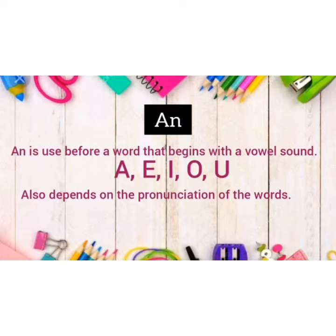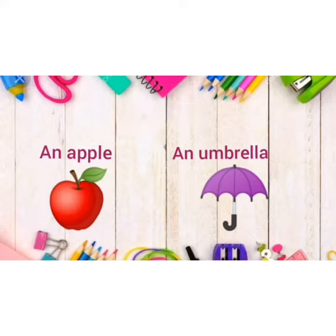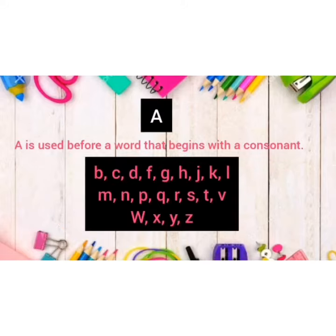...i, o, u. It also depends on the pronunciation of the word. For example: an apple, an umbrella. 'A' is used before a word that begins with a consonant sound.